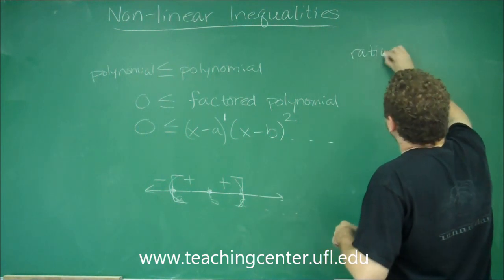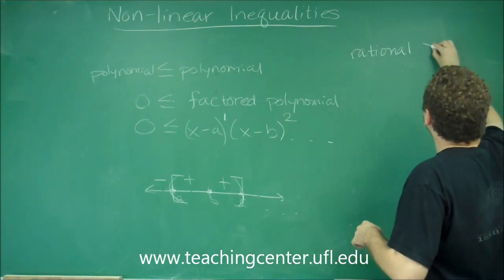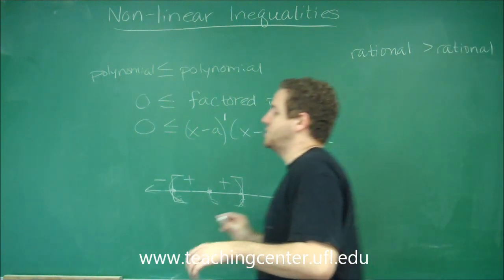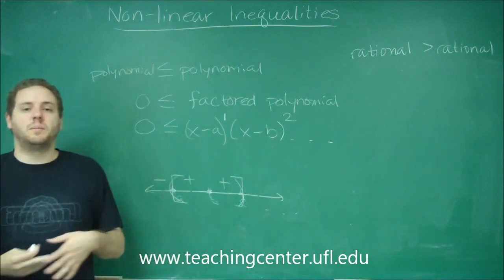So let's say we have a rational function and another rational function. Rational, of course, meaning a fraction involving polynomials.